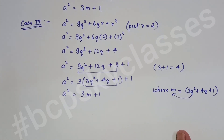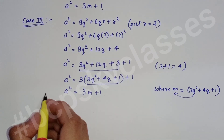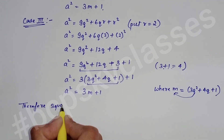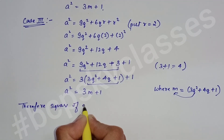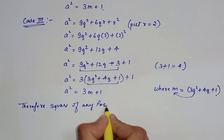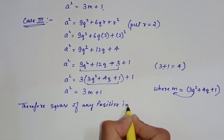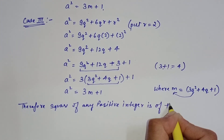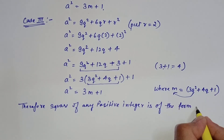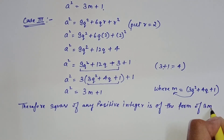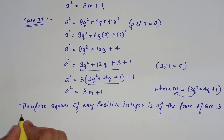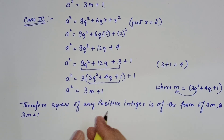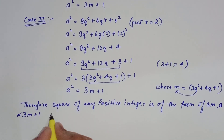Therefore, the square of any positive integer is of the form 3m or 3m + 1. Yeh hamara answer ho jayega.